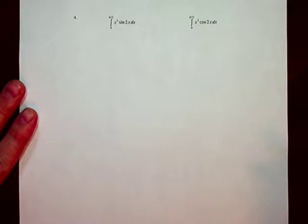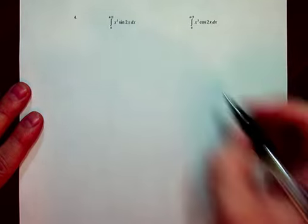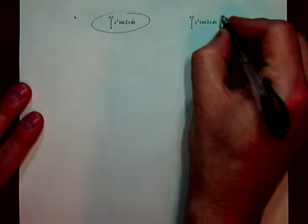Now, this one is a little bit different because it's a definite integral, but let's go ahead and start with the first one. One of the best indications that we're going to use parts is you have two functions, like you have a product of functions, and those two functions are of different families. X squared is from the polynomial family. Sine is from the trigonometric family. So that's a pretty good indication that you're going to use parts.